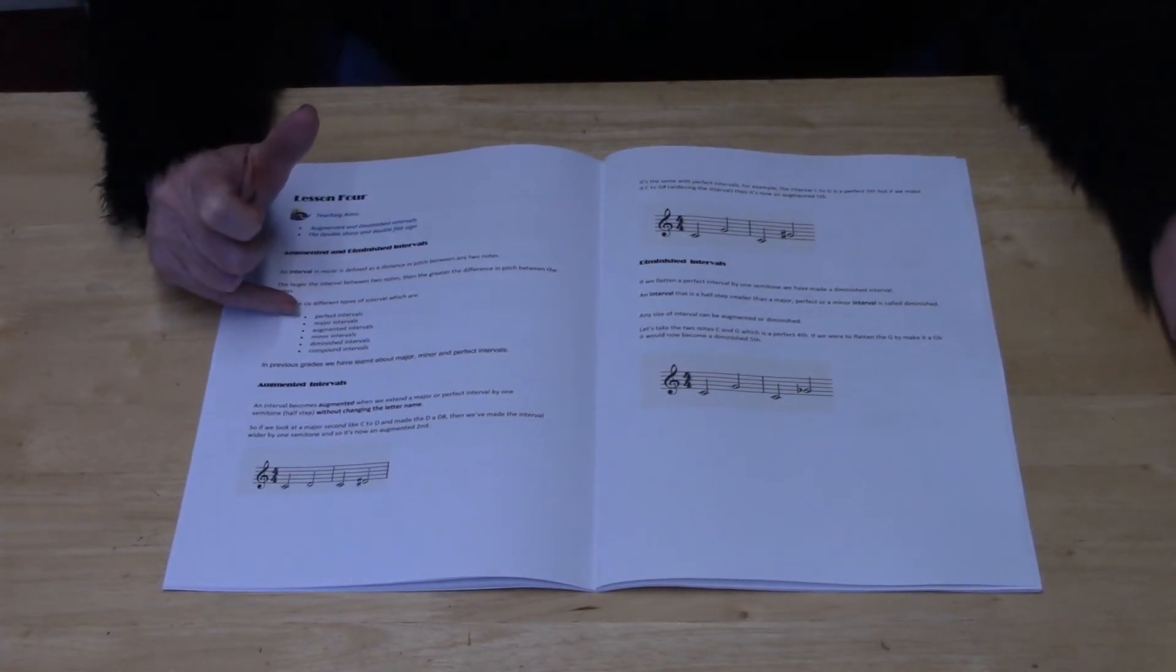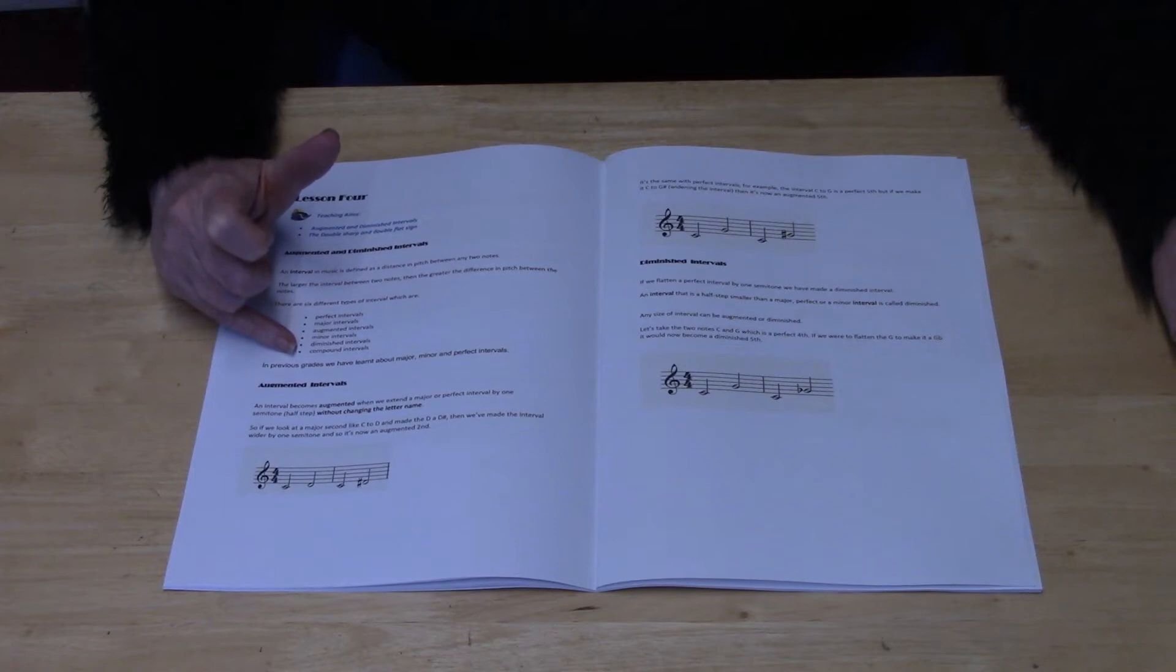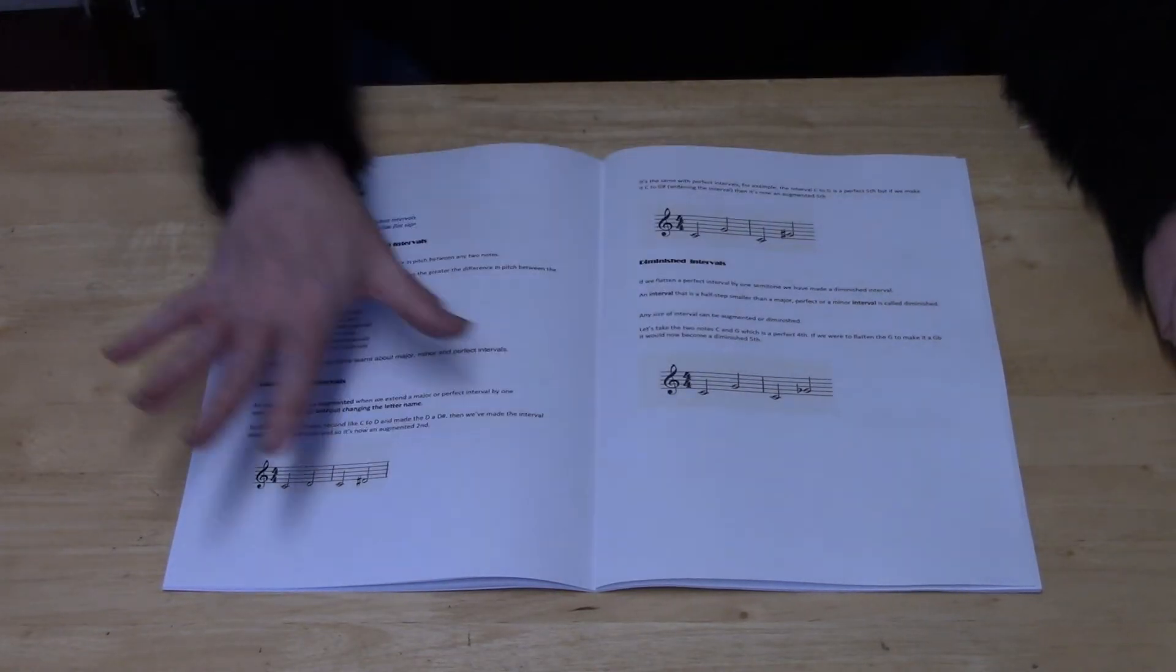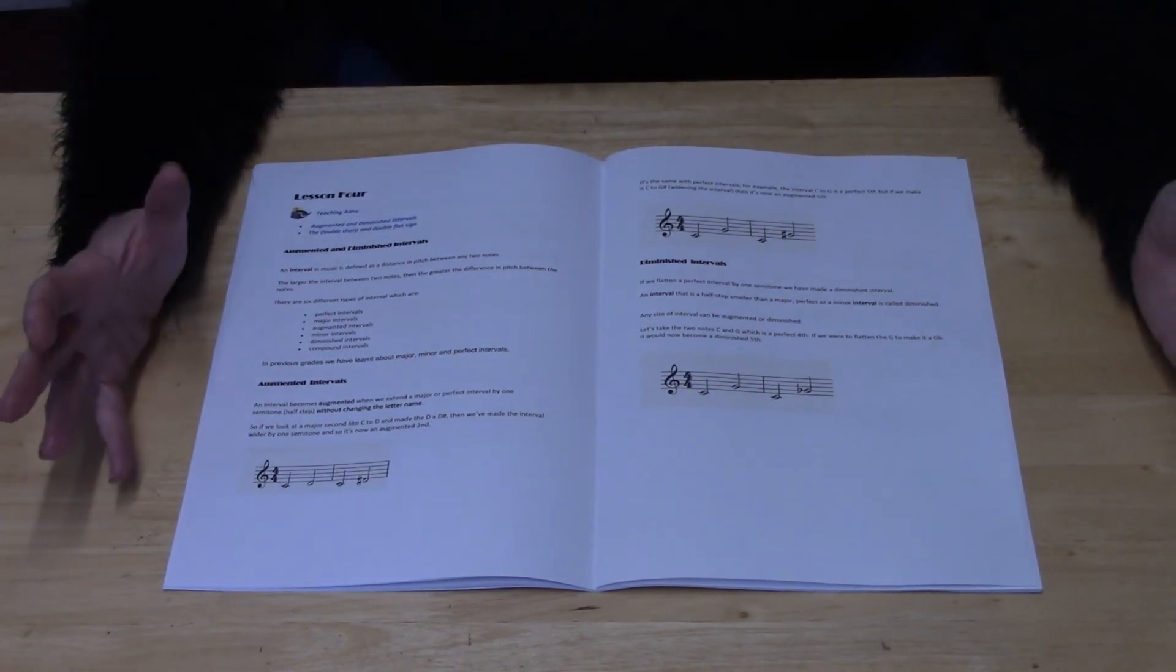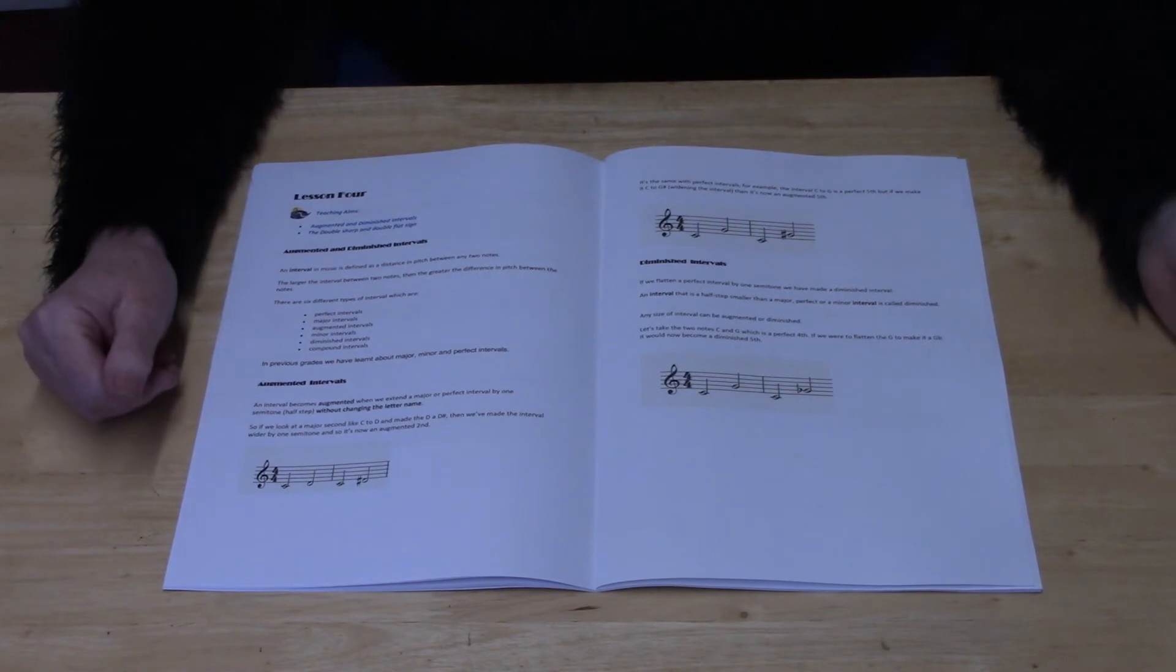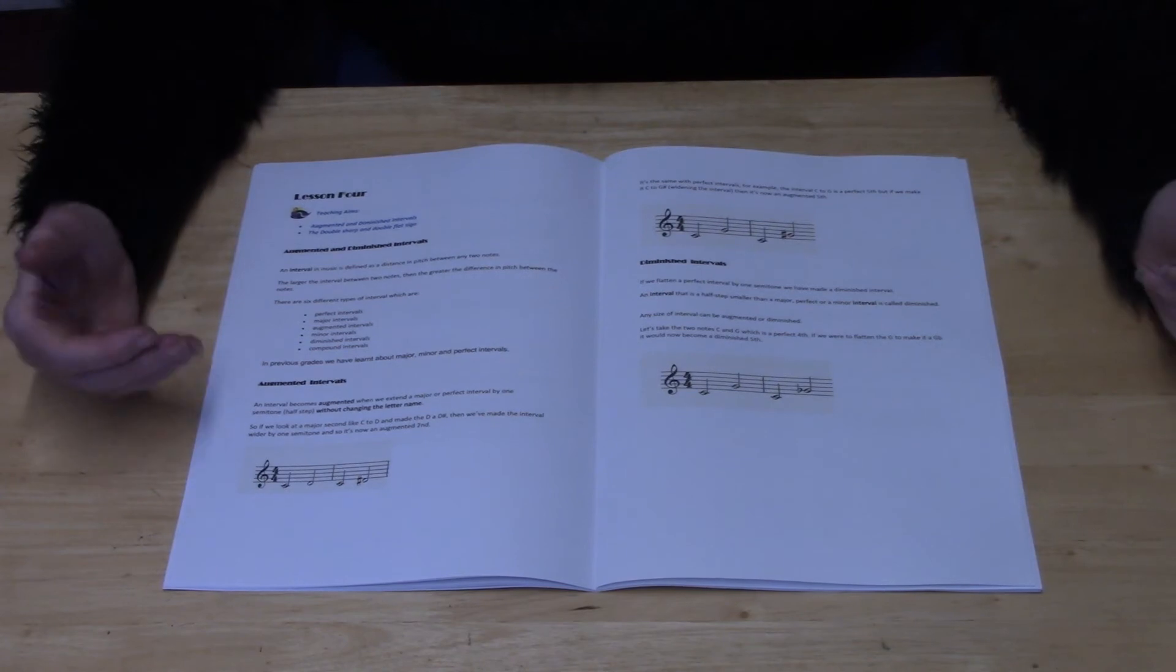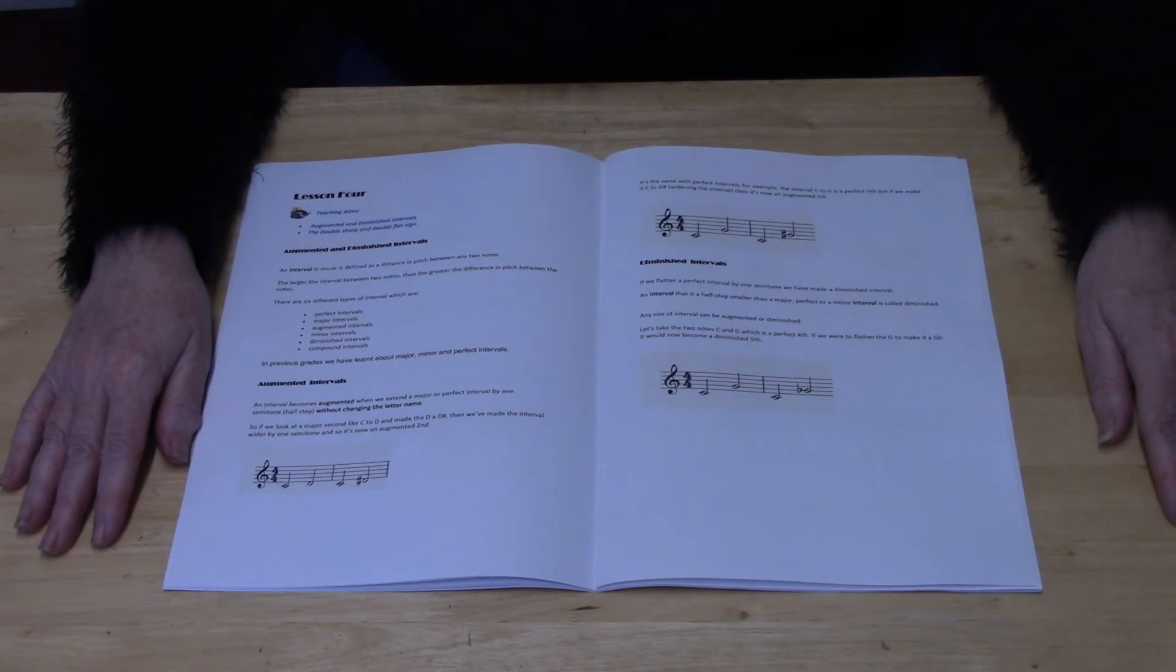You've got your perfect intervals, major intervals, augmented intervals, minor intervals, diminished intervals, and compound intervals. All of these are now shown within the book. We've already discovered and talked about major intervals in previous books and also minor intervals. So the new interval that we're going to be looking at here will be the augmented interval.